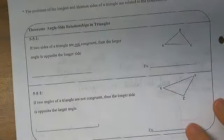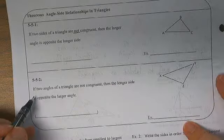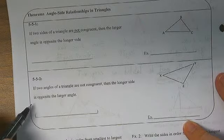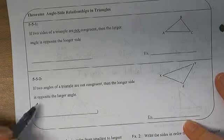B is the largest angle. So AC is going to be the longest side. And again, if two angles of the triangle are not congruent, then the longer side is across from the larger angle.